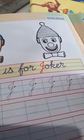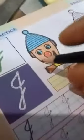J is for Joker. J-O-K-E-R Joker. You all have to color it and then send it to me. Now we are going to write J.